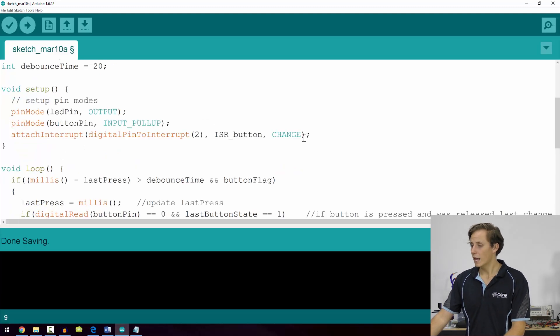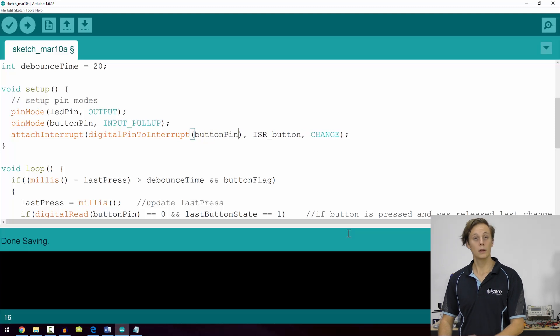We have our debounce variable as normal, declaring some pin modes, and here we can see that we're initializing this interrupt to the pin. So we use attach interrupt, and then inside there we use digital pin to interrupt and in brackets the pin that you're using. So we could change that from 2 to button pin, but 2 makes it easier to remember that we're using a specific interrupt capable pin.